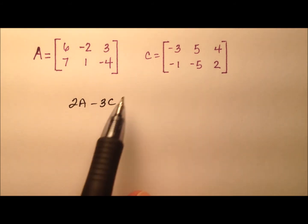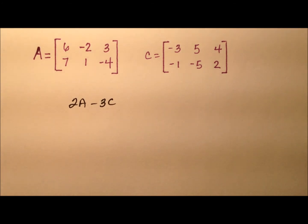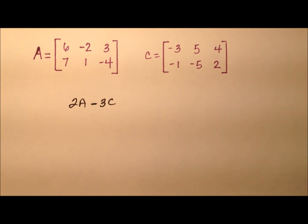So, since we're dealing with matrices, the 2 and the 3 out front are just talking about doing some scalar multiplication, which is not that bad, and then we'll do the subtraction.